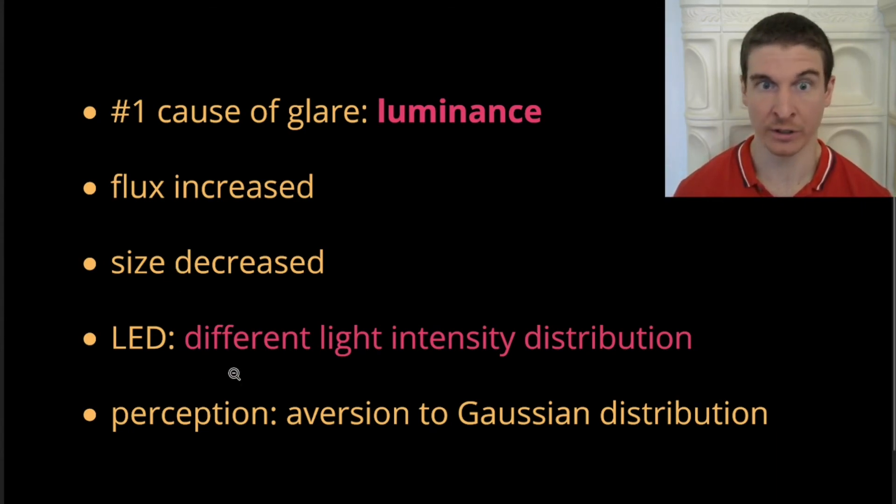More interestingly, LEDs introduced a different light intensity distribution, which leads to high peak luminance, further driving glare up, all else being equal. And this intensity distribution is also perceived by our visual system as more glaring or brighter because of an intrinsic aversion response that we have to such Gaussian-like intensity distributions.